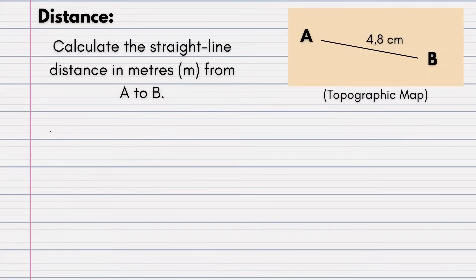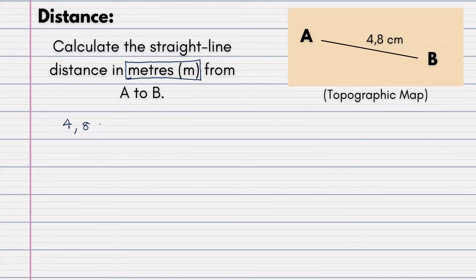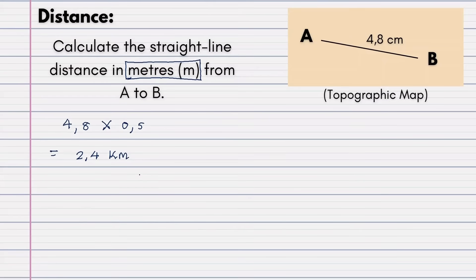Now I want to show you, using the exact same example, how we would do it if they asked for the answer in kilometers. It is the exact same way you calculated, but you just change the scale factor. We already know the measurement is 4.8 centimeters, but instead of multiplying by 500, we multiply by 0.5 since we want the answer in kilometers. This gives us 2.4 kilometers. Put the unit of measurement — it will be kilometers. As you can see, it is pretty easy.